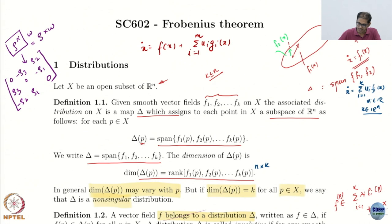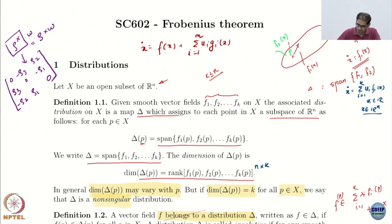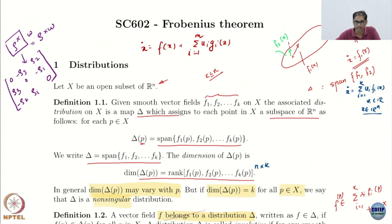Any element in the distribution — P is a base point because these vector fields are being evaluated at a particular point. That is why it is called a vector field and not a vector: it is evaluated at every point, it is a function. If you plug in point P, you take the span of all of these — that is called the distribution delta of P. It is also notationally written as delta equals span of F1 to Fk.